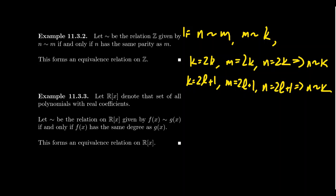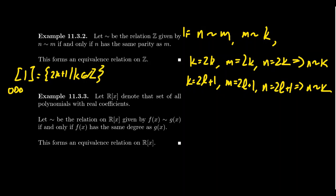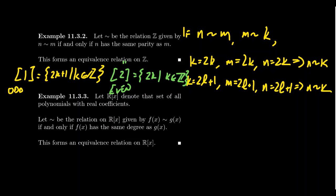There are only two equivalence classes for the parity relation. The first is the equivalence class of odd numbers, represented by [1] = {2k+1 : k ∈ Z}. The second is the equivalence class of even numbers, represented by [2] = {2k : k ∈ Z}. In terms of representatives, any even number could represent the even class, and any odd number could represent the odd class.